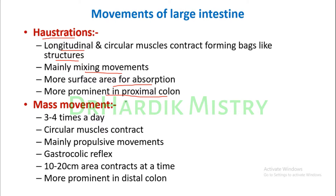The second movement is mass movement of the large intestine, which occurs three to four times a day. The circular muscles contract in a mainly propulsive movement, propelling food contents towards the rectum. The gastrocolic reflex means that whenever food is present in the stomach after a meal, it produces mass movement of the colon. In mass movement, a 10 to 20 centimeter area contracts at the same time.